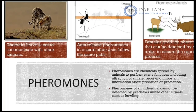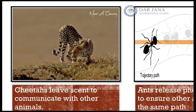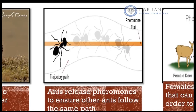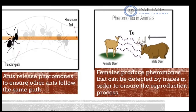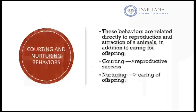Different ways pheromones are used: cheetahs leave chemicals to indicate their presence in an area. Ants follow the same path because pheromones released by leading ants are detected by others, guiding them along the same route. Pheromones are also used for mating — females produce pheromones that can be detected by males, prompting them to approach for mating.